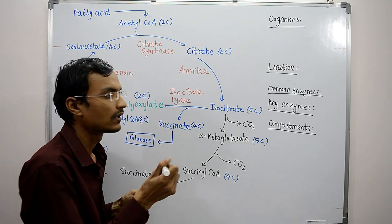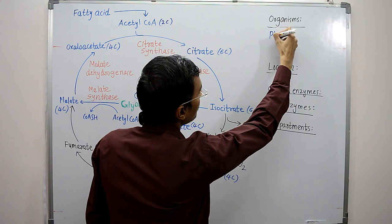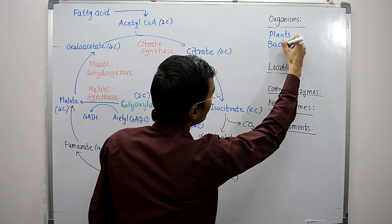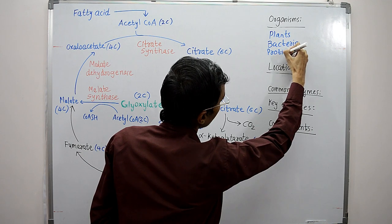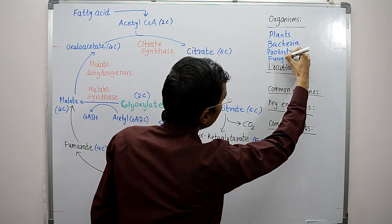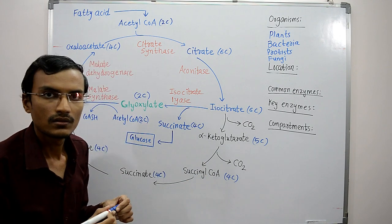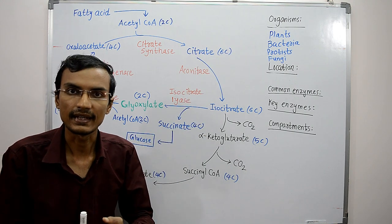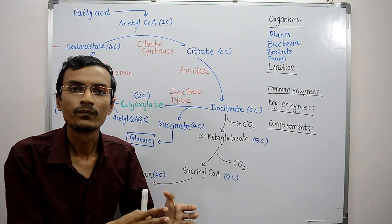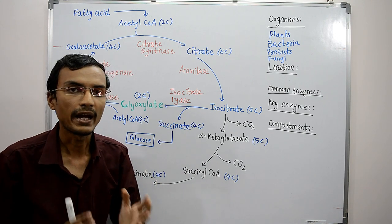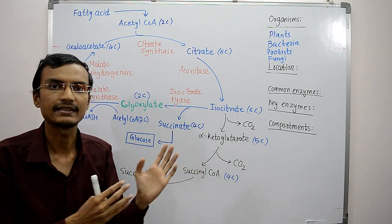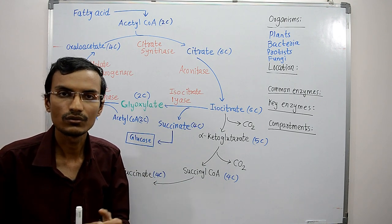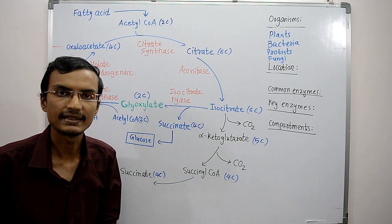The organisms include plants — especially germinating seeds — then bacteria, protists, and fungi. These organisms can synthesize net carbohydrate from fatty acid without losing carbon atoms and can also use acetate as a carbon source. For example, bacteria can grow on a medium containing acetate when sugar is not available, using acetate as a carbon source.